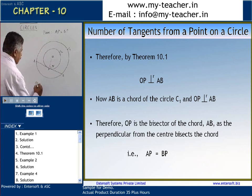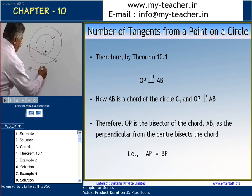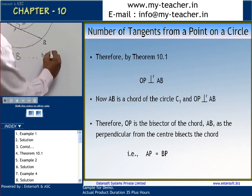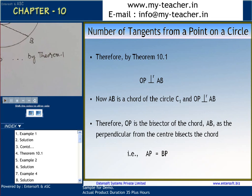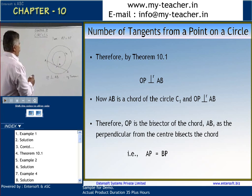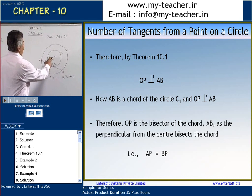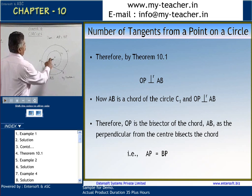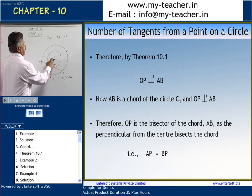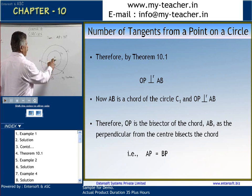Because OP is perpendicular to AB, OP is the bisector of the chord AB. Why? Because both the circles are drawn from the same center.